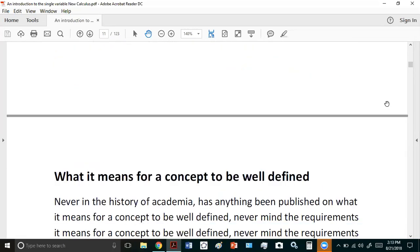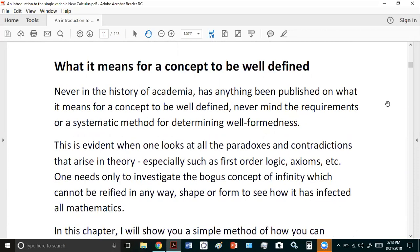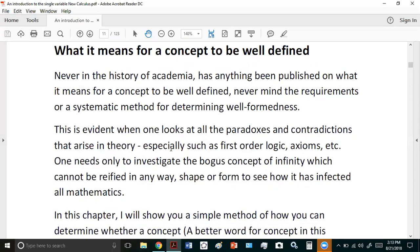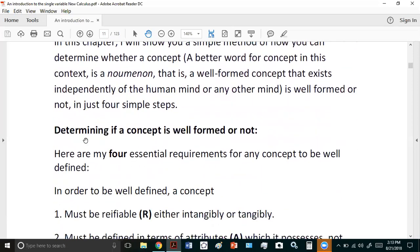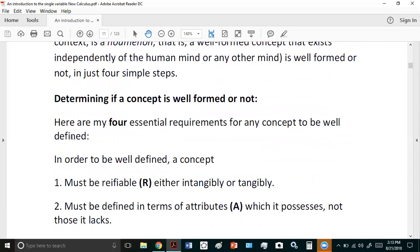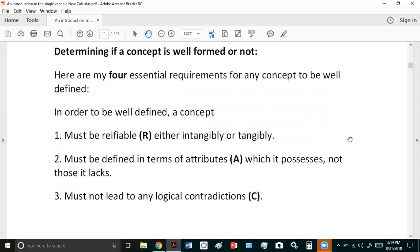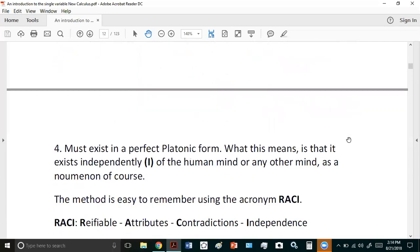Never in the history of academia has anything been published on what it means, and there's no systematic method for determining well-formness. My method was the first that was ever published and I'll show you in a moment what those four essential requirements are for any concept to be well-defined and I'll also show you how to remember what those requirements are with an acronym which I call RACI, however you want to pronounce it.